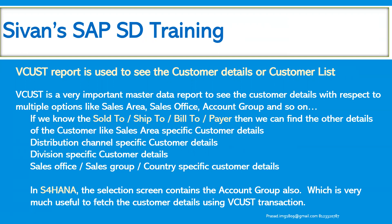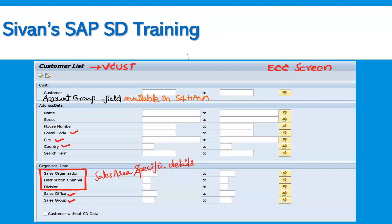I would like to highlight one more point. This entire process I am showing in the ECC system. In S4 HANA there is one additional advantage using the VCUST transaction code: account group is also included in the selection screen. We can specify the account group and extract the data for whoever is created under that particular account group. That is the major difference between ECC and S4 HANA when using VCUST. The account group field is available in S4 HANA but not in ECC.